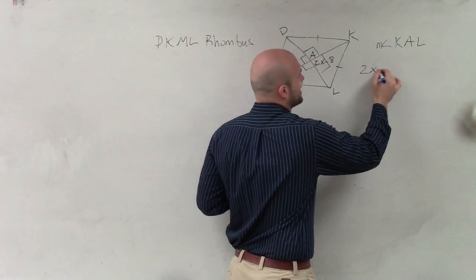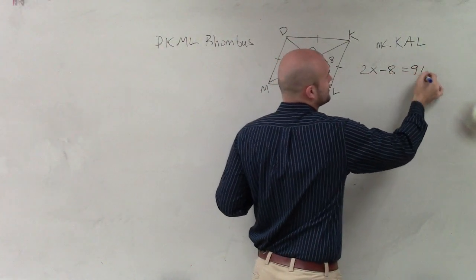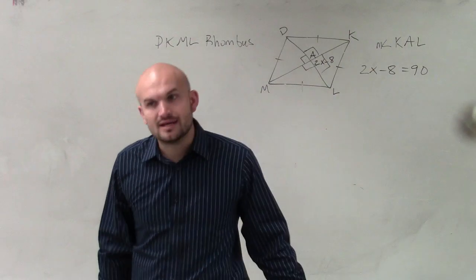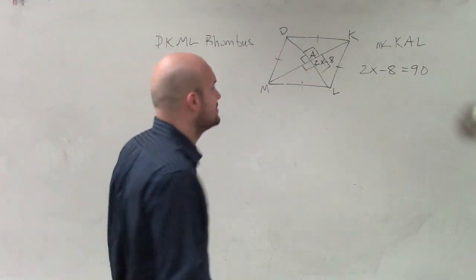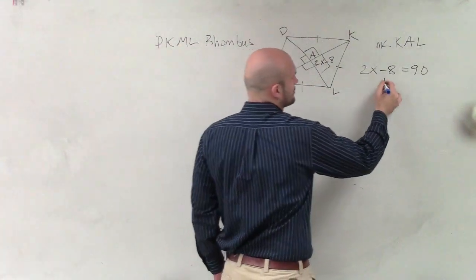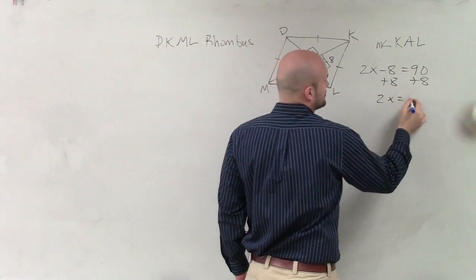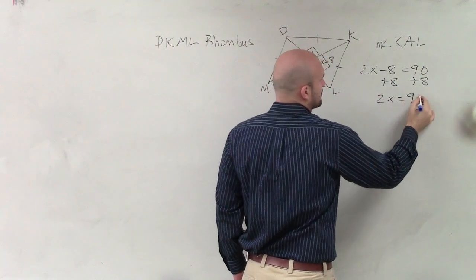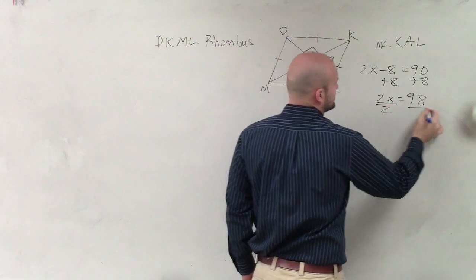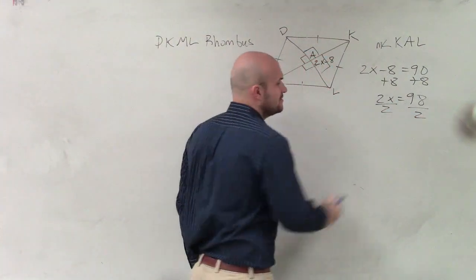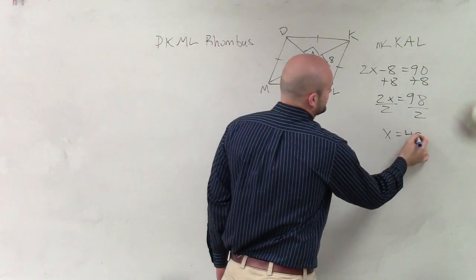So now you have this. So now I can say that 2x minus 8 equals 90 degrees, right? And now I just need to find the measure of x. So plus 8 plus 8, 2x equals 98. Divide by 2, divide by 2. x equals 49.